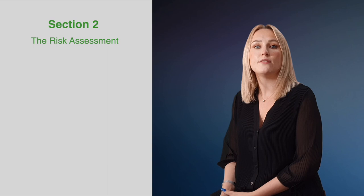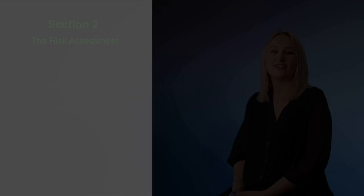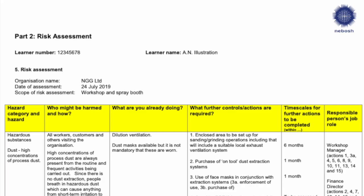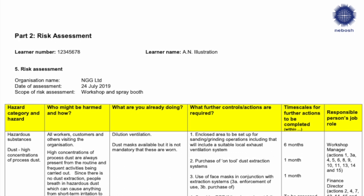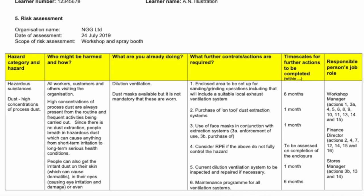It is imperative that you include certain information in your risk assessment to demonstrate your competency to your NEBOSH examiner. You must identify 10 different hazards from 5 different hazard categories in your risk assessment in order to pass. Using the NEBOSH risk assessment template will ensure the appropriate fields are available to you. This includes fields for the hazard, who might be harmed by it, the control measures already in place, further actions to be taken, when they should be taken by, and who is responsible for ensuring the action is completed.